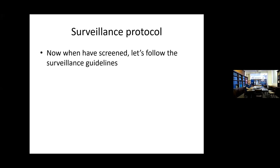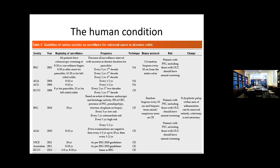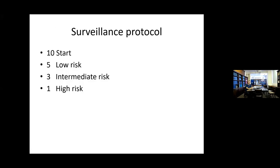Now we've screened the patient and done the colonoscopy — let's follow some surveillance guidelines. Various societies have published guidelines: BSG, AGA, ECCO, NICE, Australian — all more or less the same. To simplify: 10-5-3-1. At 10 years you start; five-year intervals for low risk; three-year intervals for intermediate risk; and one-year intervals for high risk.